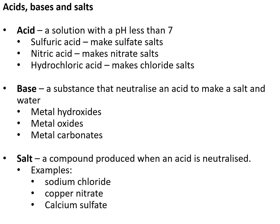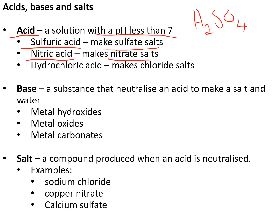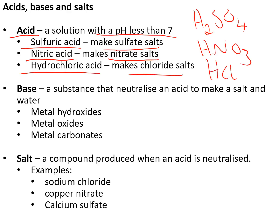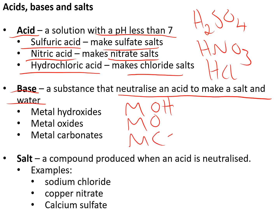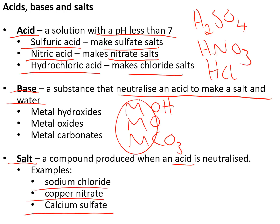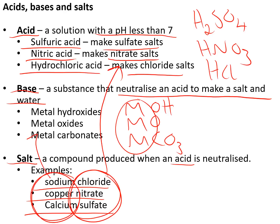Acids, bases, and salts. An acid is a solution with a pH of less than 7. Three to know: sulfuric acid makes sulfate salts (H₂SO₄); nitric acid makes nitrate salts (HNO₃); and hydrochloric acid makes chloride salts (HCl). A base is a substance that neutralises an acid to make a salt and water — three types: metal hydroxides (MOH), metal oxides (MO), and metal carbonates (MCO₃), where M stands for any metal. A salt is produced when an acid is neutralised by a base — for example, sodium chloride, copper nitrate, calcium sulfate. The second part of the name tells you the acid it came from and the first part tells you the metal from the base.